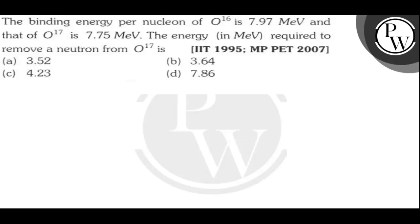Hello Bacho, let us read the question. The binding energy per nucleon of O-16 is 7.97 MeV and O-17 is 7.75 MeV. The energy required to remove a neutron from O-17 is: 3.52, 3.64, 4.23, or 7.86.